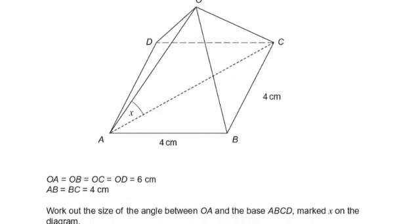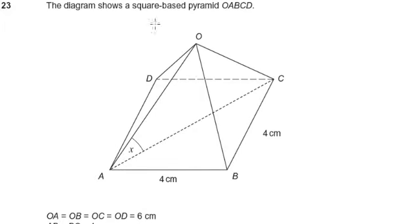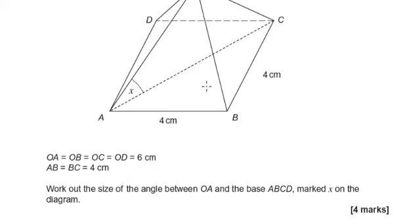Okay, last question, question 23. We've got a square-based pyramid, so the bottom is square, which means this angle is 90 degrees, even though it doesn't look it. When it's flat on the table, it will be 90 degrees.